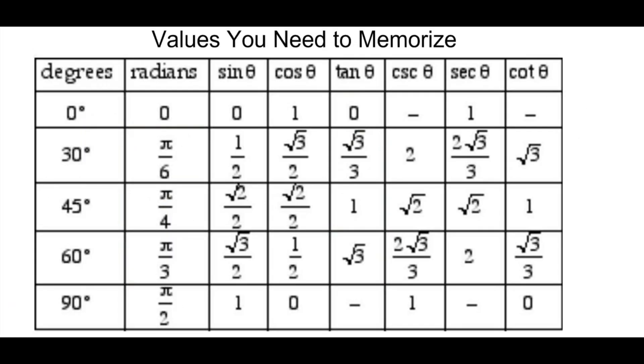Now, there's one more thing that you need to know. There are some values of sine and cosine that you have to memorize for calculus. In particular, 0, pi over 6, pi over 4, pi over 3, and pi over 2.